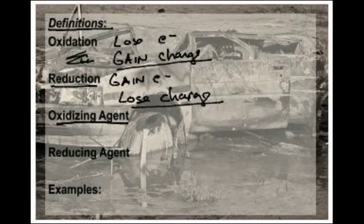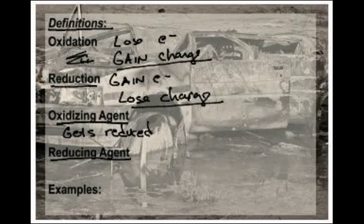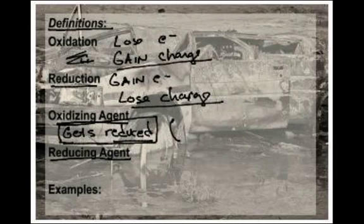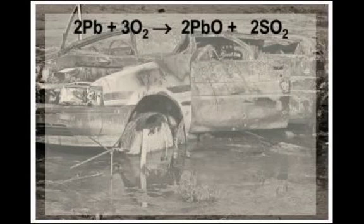Then we have these odd things called oxidizing agents and reducing agents. The oxidizing agent is the thing that gets reduced. If it gets reduced, that means it did the oxidizing — it went out and said your charge is going to go up, and by doing that its charge had to go down and got reduced. So the thing that's reduced is called the oxidizing agent. That must mean the reducing agent is the thing that gets oxidized. If it gets oxidized, it does the reducing. It's kind of a weird thing — you just got to know.